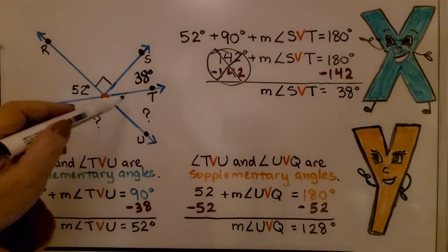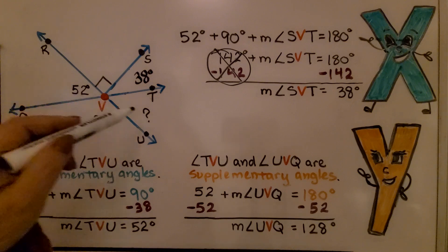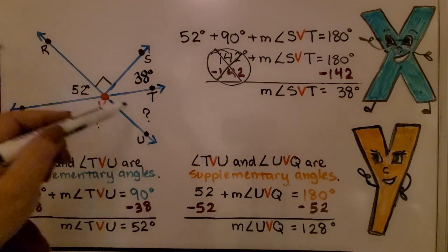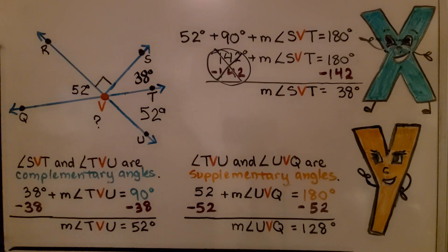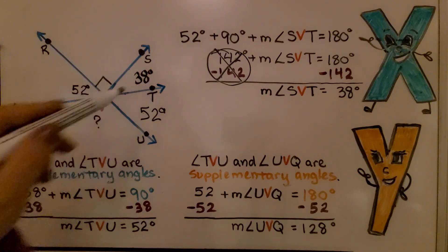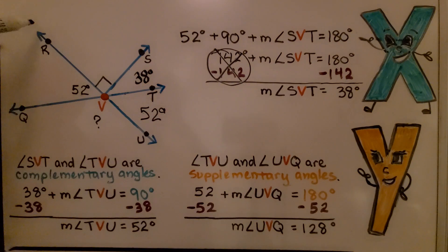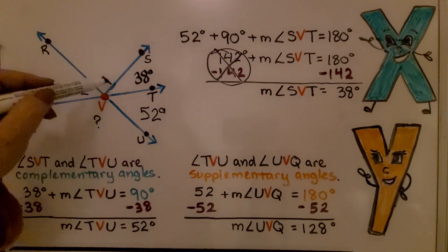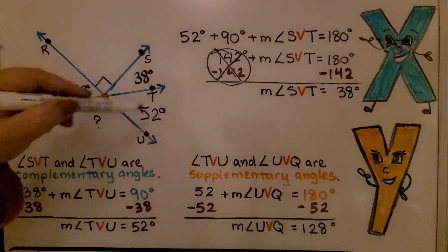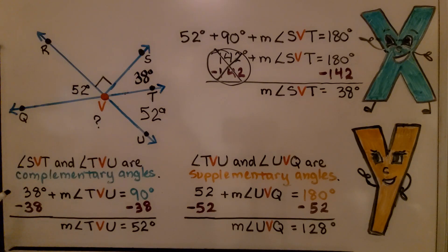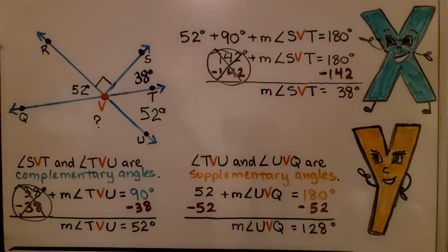Now let's find the measure of angle TVU. Vertical angles are opposite angles with the same measure, so TVU should be 52 degrees. We can also verify this with an equation: since SVT is 38 degrees, and SVT and TVU together form a 90-degree angle, we write: 38 plus the measure of angle TVU equals 90. Subtracting 38 from each side, the measure of angle TVU equals 52 degrees — confirmed by the vertical angle relationship.